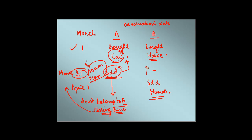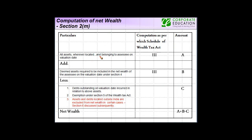Whereas in case of B, on March 31 he continued to own the house — he sold it but on April 1. So on the valuation date he was owning this asset, and therefore it has to be included in the wealth of B. The second thing which has to be added is deemed assets required to be included in the net wealth of the assessee on the valuation date under Section 4. Just like there was a concept of deemed property in house property, similarly there are certain assets which are deemed to be the asset of the assessee for wealth tax purpose. We are going to see this in the subsequent slides, but you need to add the deemed assets to the normal assets.